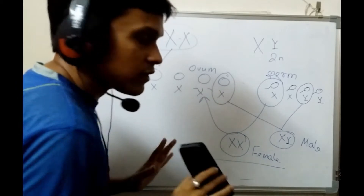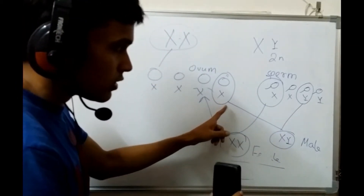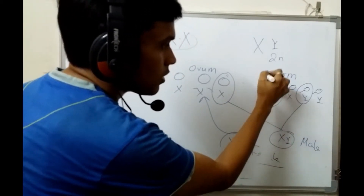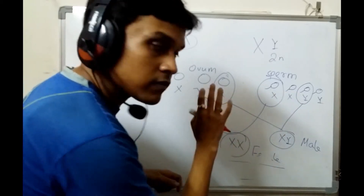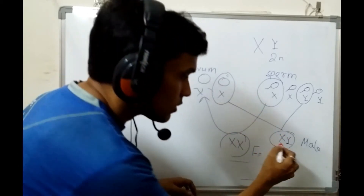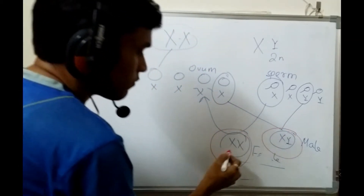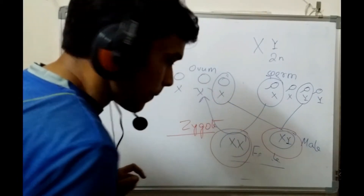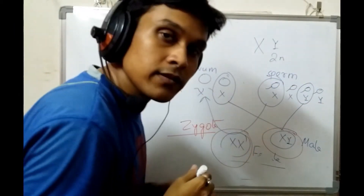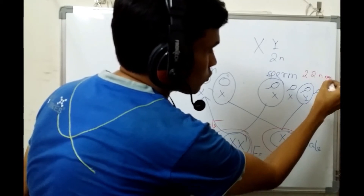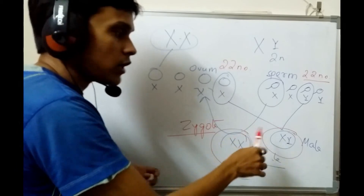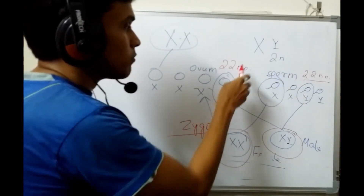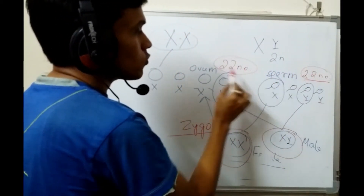After fertilization, when the first diploid cell is formed, this cell is called a zygote. I only considered X and Y, but sperm also contains 22 autosomes in addition to the sex chromosome. Similarly, 22 autosomes are present in the ovum as well.